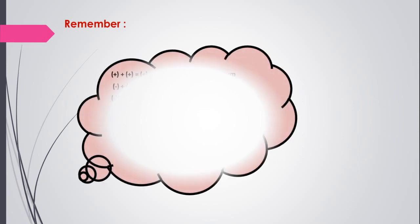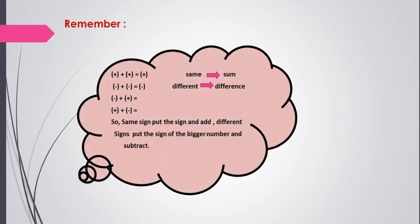Let's remember first the sign rule. If we have the same signs, we will sum. If they are different signs, we will difference. Same sign: put the sign and add. Different signs: put the sign of the bigger number and then subtract.